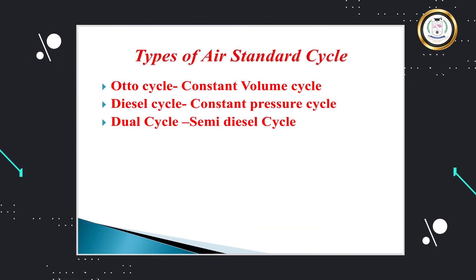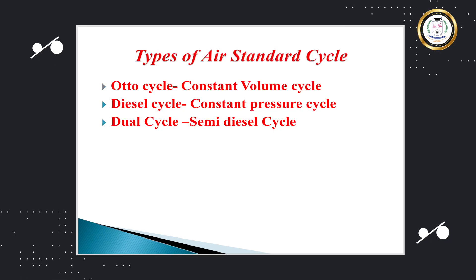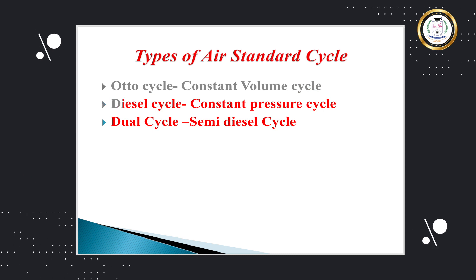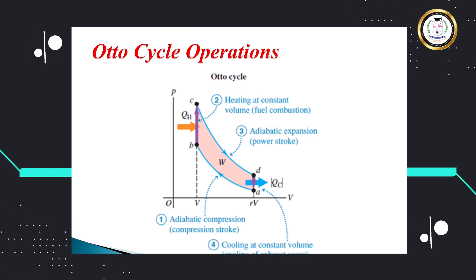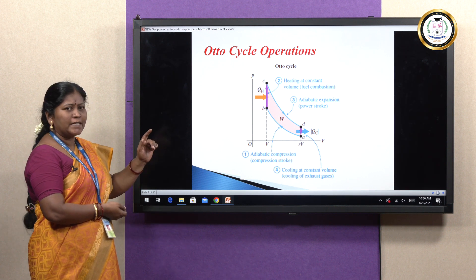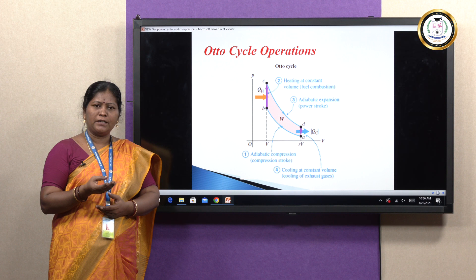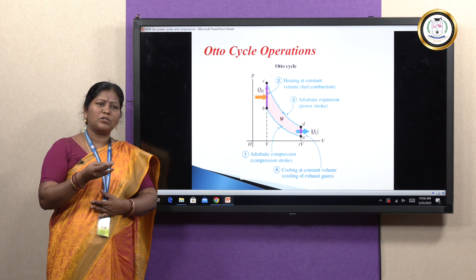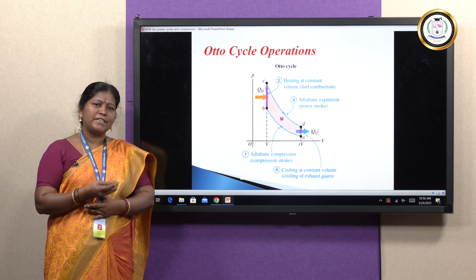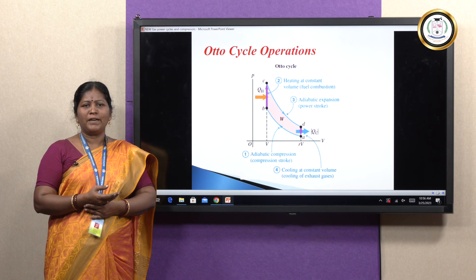The types of air standard cycles: mainly the Otto cycle, also called the constant volume cycle; the diesel cycle, also called the constant pressure cycle; and the dual cycle, also called the semi-diesel cycle. Now we concentrate on the thermodynamic processes involved. The basic thermodynamic processes are: isochoric or constant volume process, isobaric or constant pressure process, isothermal or constant temperature process, isentropic or adiabatic process, and the polytropic process.